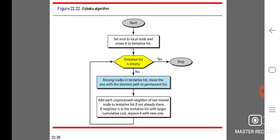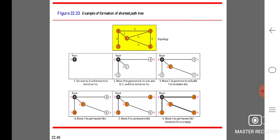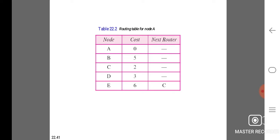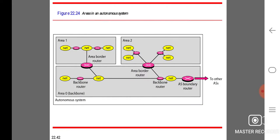Example of formation of shortest path tree. Set route A and move A to tentative list. Move A to permanent list and add B, C to its tentative list. Move C to permanent and add E to the tentative list. Move D to the permanent list. Move B to the permanent list. Move E to the permanent list. The tentative list will be empty. Routing table for node A: node A cost is 0, next router is nil. Node B cost is 5, next router is nil. Node C cost is 2, next router is nil. Node D cost is 3, next router is nil. Node E cost is 6, next router is nil.